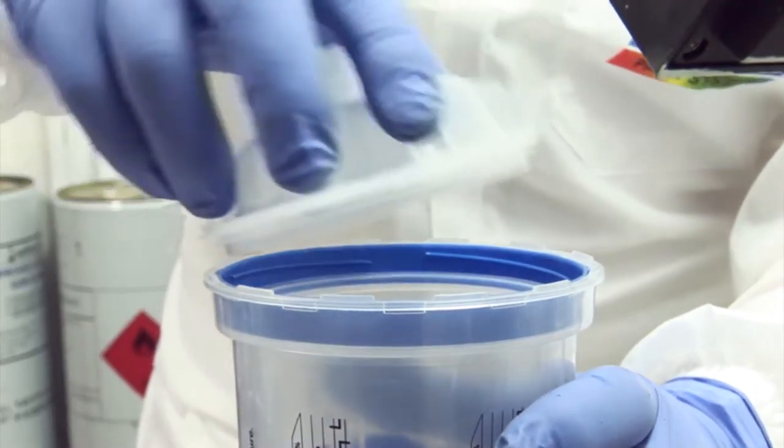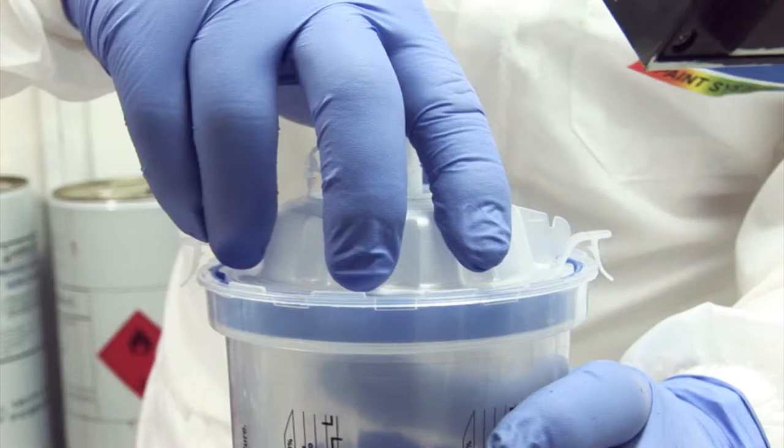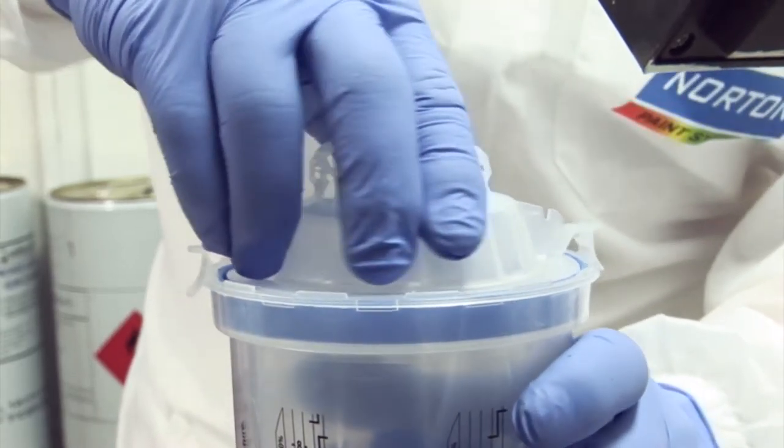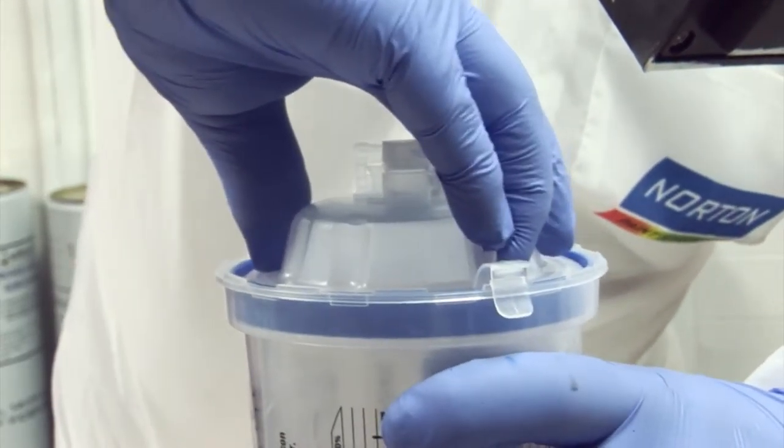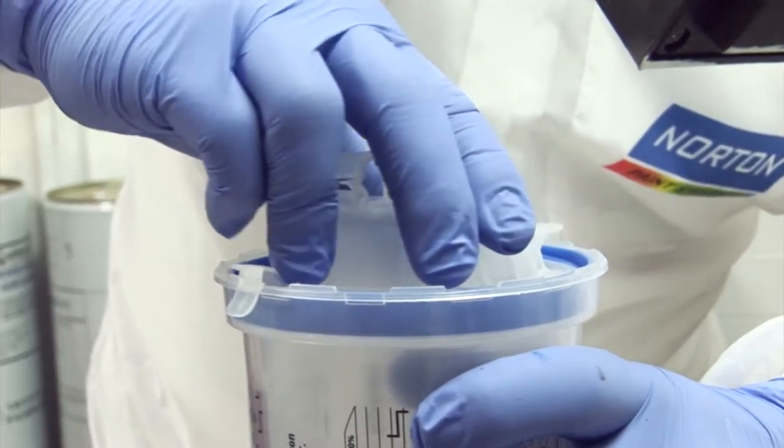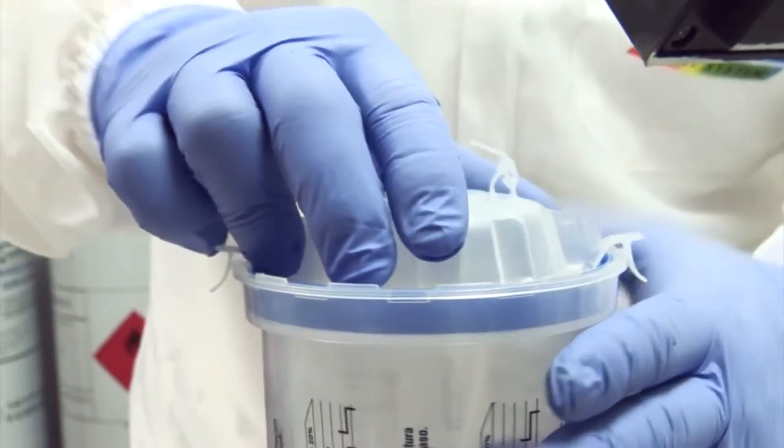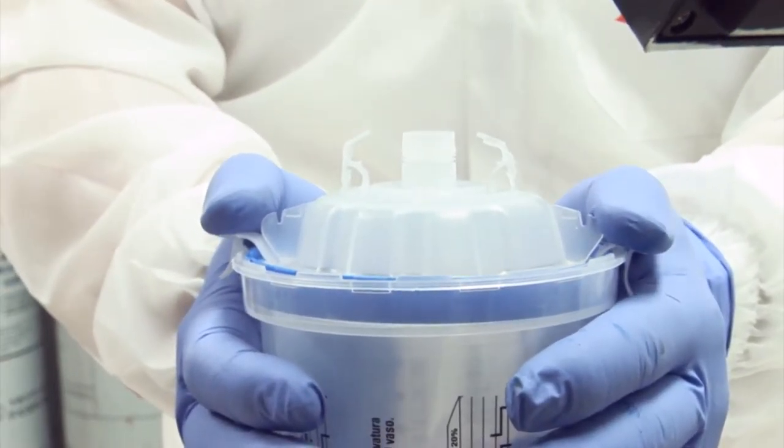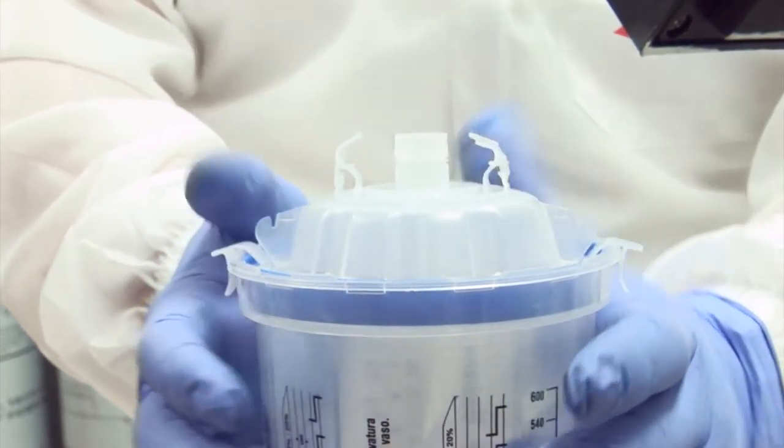Place the lid onto the hard cup. Turn it twice to the left. Listen for the two clicks. Then turn back once to the right to lock it in place. Fold down the safety clips and the paint system is airtight and ready to use.